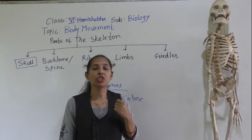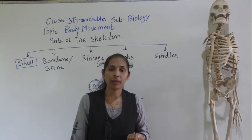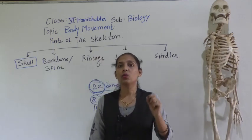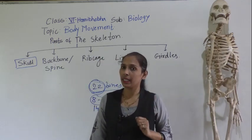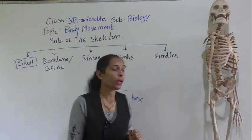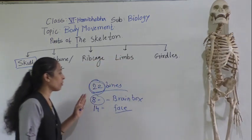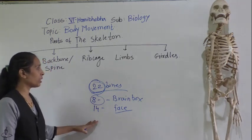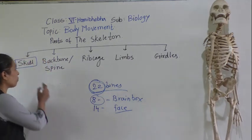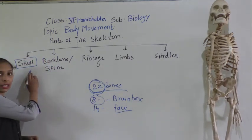The lower jaw can move because it helps us to chew food and to speak clearly. So all skull bones are fixed and immovable, but the lower jaw is the exception — it can move up and down to chew food properly and to speak clearly.